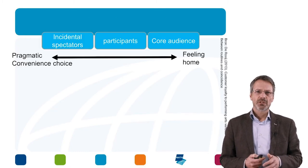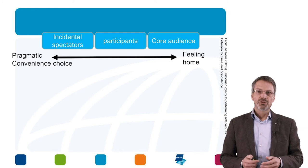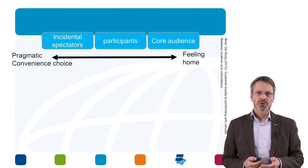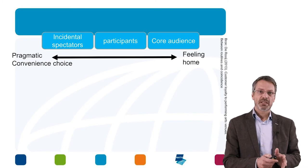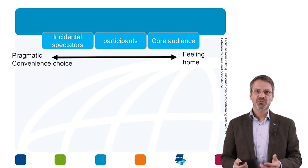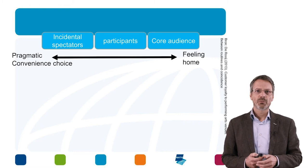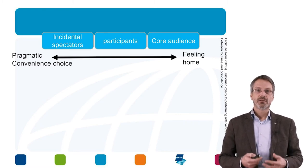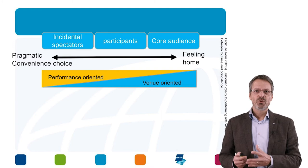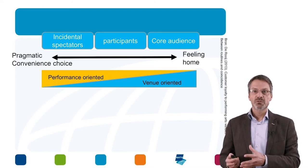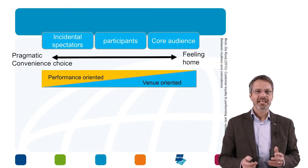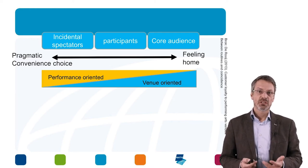In my PhD study in 2013, one of the main conclusions — after talking to 50 customers of Theaters Tilburg — was a division between incidental spectators attending once or twice, participants attending three to five times, and core audience. The core audience felt at home in the theatre, while incidental spectators made pragmatic convenience choices. The core audience was venue-oriented and monogamously loyal — only visiting this one theatre — while incidental spectators were performance-oriented and did not really care which theatre the performance was in.